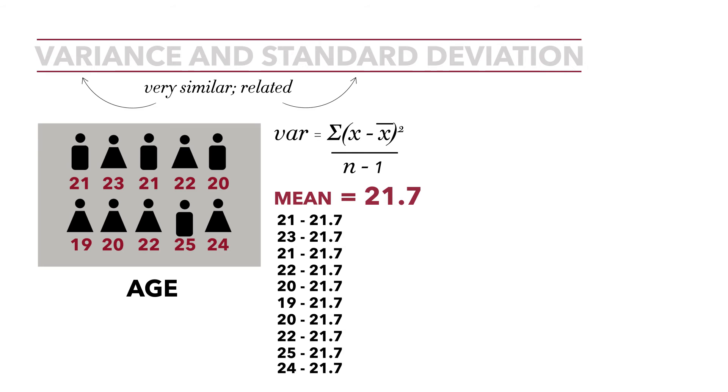If we do this math, 21 minus 21.7 is negative 0.7, 23 minus 21.7 is 1.3, then minus 0.7, 0.3, minus 1.7, minus 2.7, minus 1.7, 0.3, 3.3, and 2.3. Now, if we sum all of these differences, you'll see that they sum to zero.